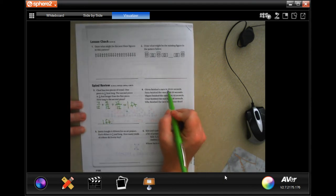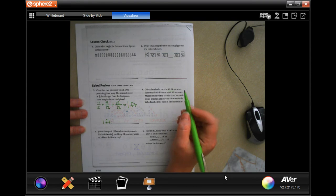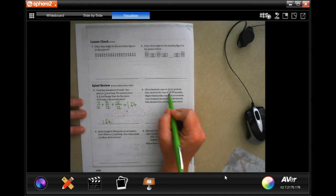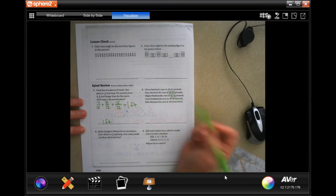Okay, Olivia finished the race in 40.64 seconds, Patty finished the race in 40.39 seconds, Miguel finished the race in 41.44 seconds, Chad finished the race in 40.46 seconds. Who finished the race in the least time? So we need to find the smallest number.